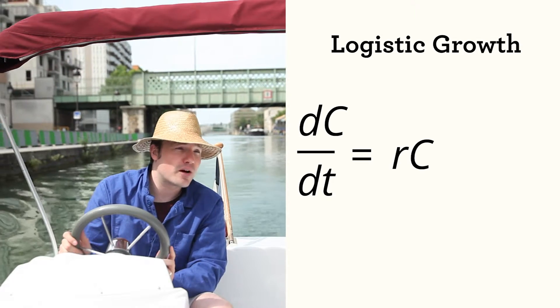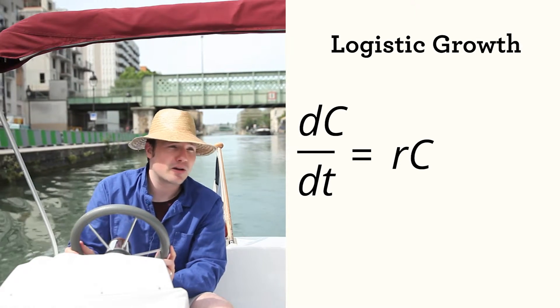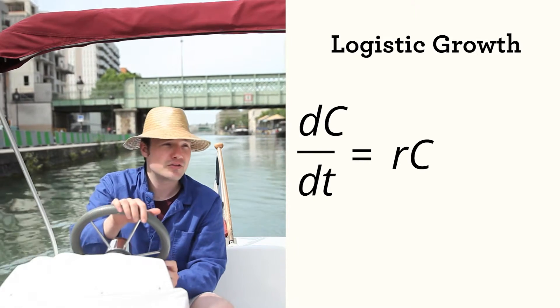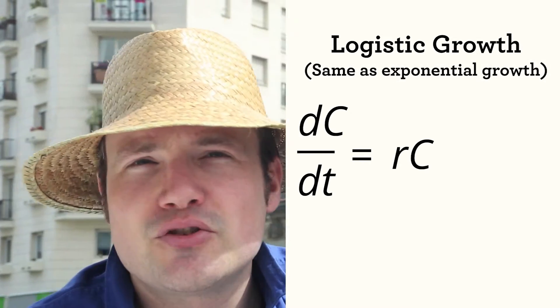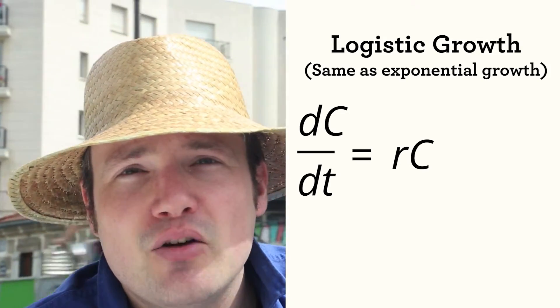In this case, the logistic growth model looks very much like the exponential model. The cell production rate equals RC. So how does that make us feel? Well, it makes sense to me. If K is very large, it means the bacteria have lots of space and nutrients, and growth really is basically exponential, at least for a while.